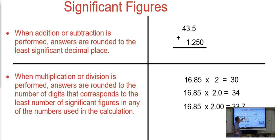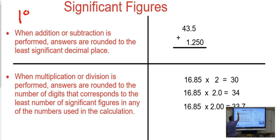This is where we are. I'm recommending you use the two-column note style where you put the rule and the practice, then the rule and the practice. The top box here is for addition and subtraction rules because they're different. The bottom left box is for multiplication and division. You really need these rules or at least to understand them 100%.